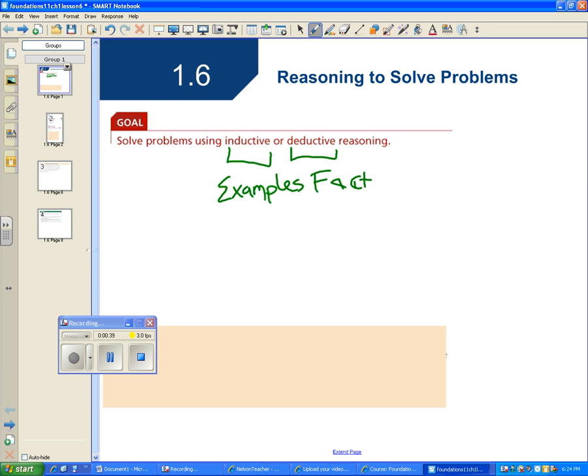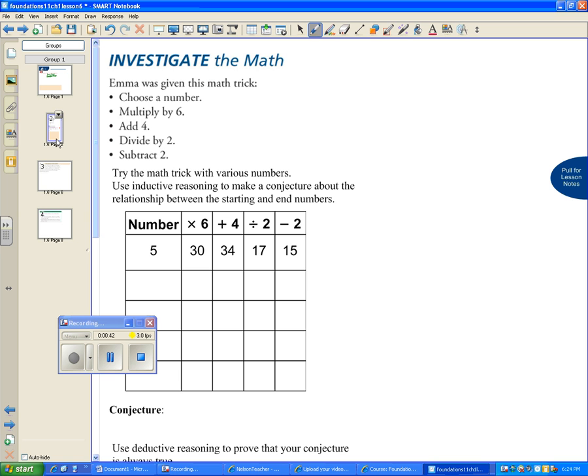What we're going to do is Emma has a number trick. We're going to choose a number, multiply by 6, add 4, divide by 2, and subtract 2. We're going to choose a bunch of numbers and use inductive reasoning. We're going to use the patterns that we see to make a conjecture about the relationship between the starting number and its ending number.